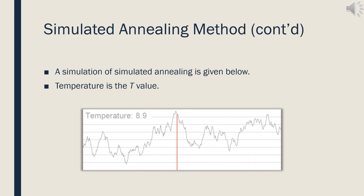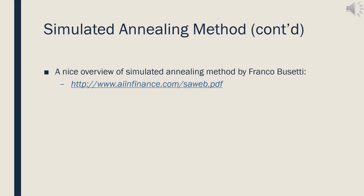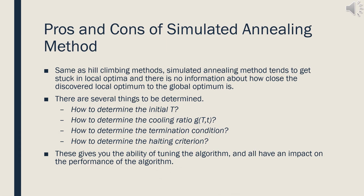When T is large, the algorithm scans a larger area. While T is decreasing, it scans a narrower area, but the deviation from the global optimum decreases as well. As distinct from stochastic hill climbing, new points are always accepted if they are better than the current point; there is a probability limit of acceptance only when the new points are worse. Just like hill climbing methods, simulated annealing tends to get stuck in local optima, and we have no information about how close the discovered local optimum is to the global optimum. Additionally, we must determine the initial T, the cooling ratio, the termination condition, and the halting criterion — all of which impact the algorithm's performance, but also allow us to tune it.